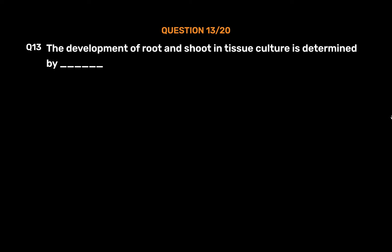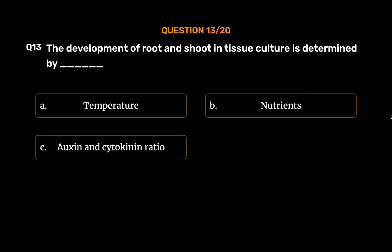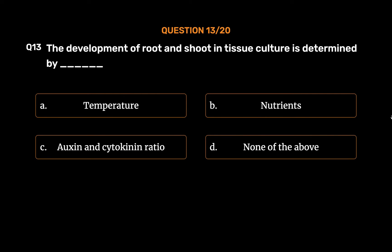Question No. 13: The development of root and shoot in tissue culture is determined by. Option A: Temperature. Option B: Nutrients. Option C: Auxin and cytokinin ratio. Option D: None of the above. The correct answer is Option C: Auxin and cytokinin ratio.